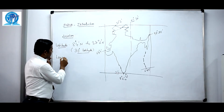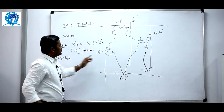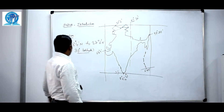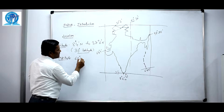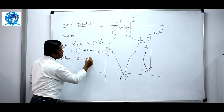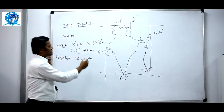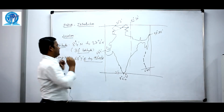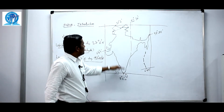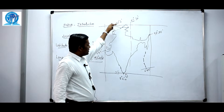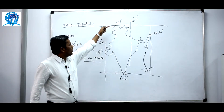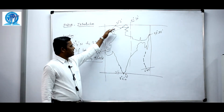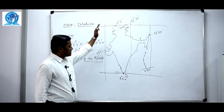The longitudinal extent of our country starts from Gujarat to Arunachal Pradesh — that is 68 degrees 7 minutes east to 97 degrees 25 minutes east. The northernmost point of the Indian mainland is Indira Kol, and the southernmost point of the Indian mainland is Kanyakumari.